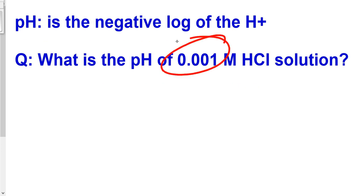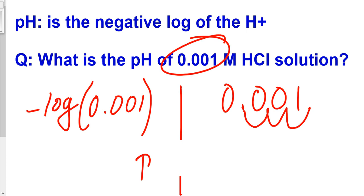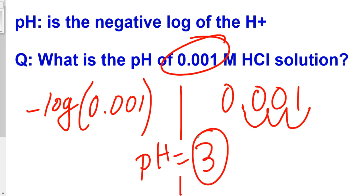Let's try another example. We're given an acidic solution concentration — identify the pH. Take the negative log of 0.001. If you don't have a scientific calculator, move the decimal: one, two, three places. Therefore pH equals 3.